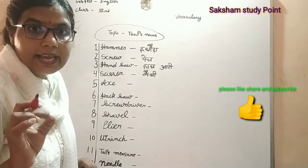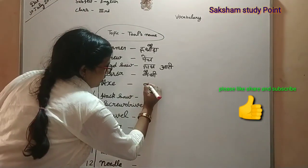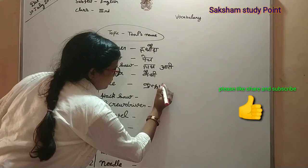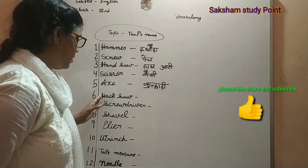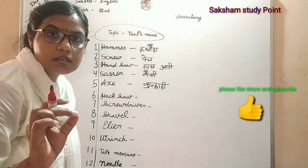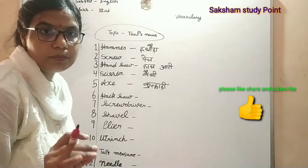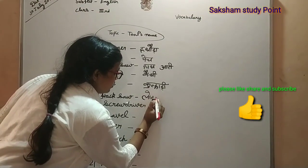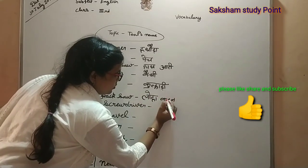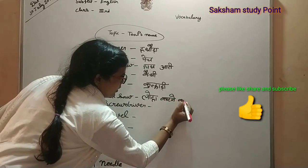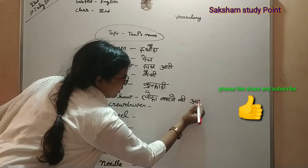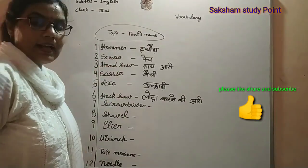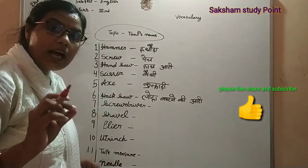A-X-E, axe. Axe means hota hai — kulhadi. Next — H-A-C-K-S-A-W, hacksaw. Hacksaw means hota hai — loha kaatne ki ari.